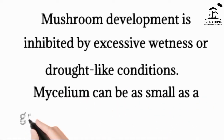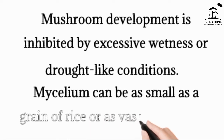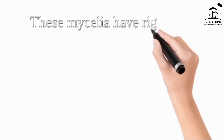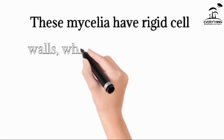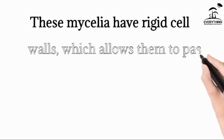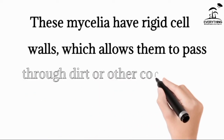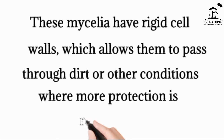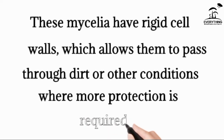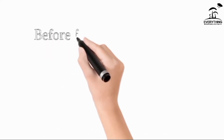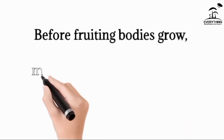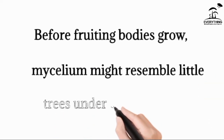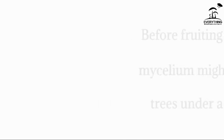Mycelium can be as small as a grain and it can also be as large as a forest. When mushrooms get a favorable environment they can grow very large — to the extent of a forest. The mycelium has a rigid cell wall that serves as an adaptive structure which allows it to pass through debris and other conditions. Before the fruiting bodies grow, mycelium are very tiny thread-like structures that you can't see with the naked eye — you need a microscope. Under a microscope, mycelium might resemble little trees.